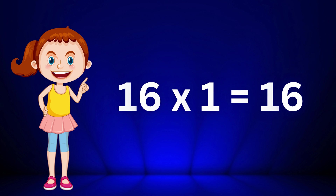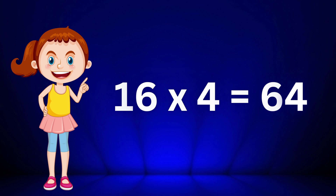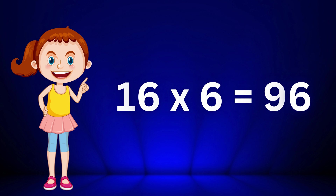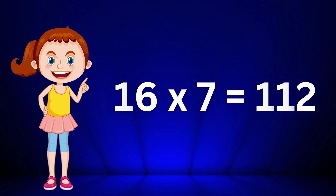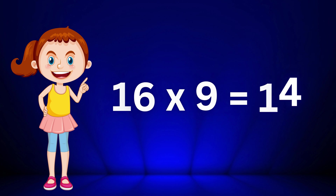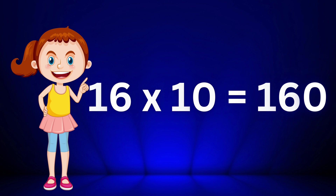Table of sixteen: sixteen one's are sixteen, sixteen two's are thirty-two, sixteen three's are forty-eight, sixteen four's are sixty-four, sixteen five's are eighty, sixteen six's are ninety-six, sixteen seven's are one hundred twelve, sixteen eight's are one hundred twenty-eight, sixteen nine's are one hundred forty-four, sixteen ten's are one hundred sixty.